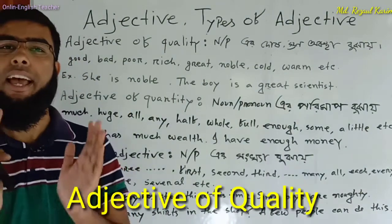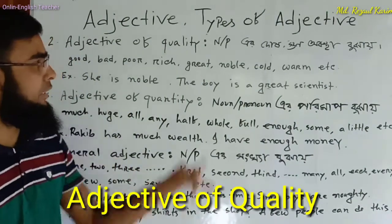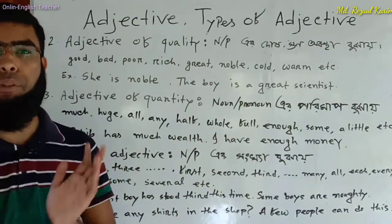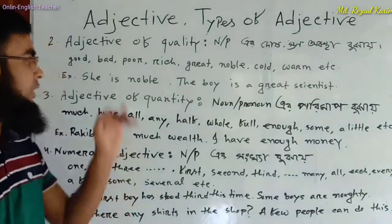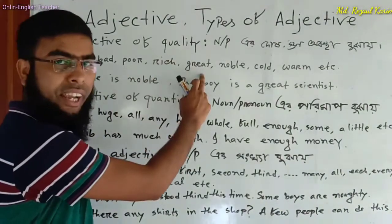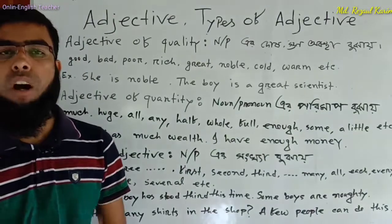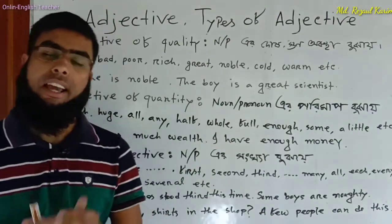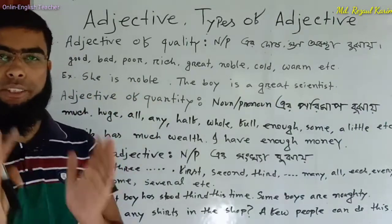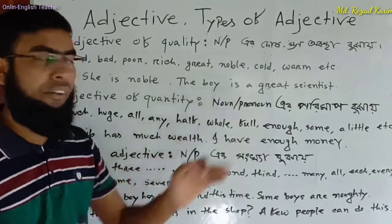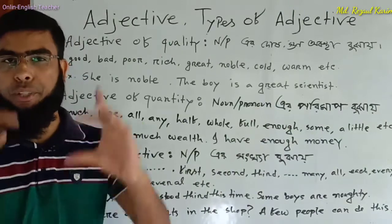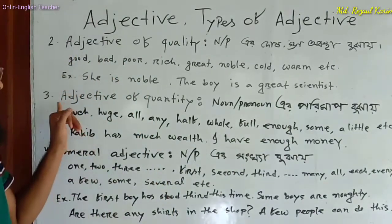Now, adjective of quality — it indicates the quality of a noun or pronoun. Examples of adjectives of quality: good, poor, rich, red, noble, warm, hot, English. For example: She is noble. The boy is a great scientist — here 'great' is an adjective of quality.